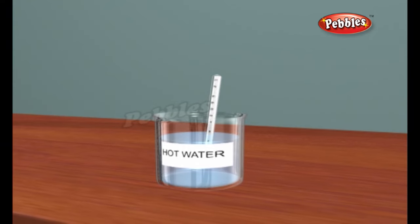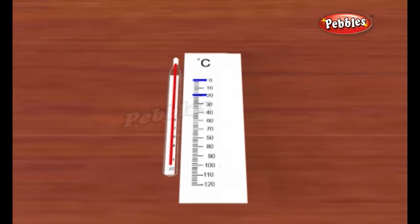Similarly, if we dip the thermometer in boiling water, we can wait for the mercury to rise up and then make a mark equivalent to 100 degrees Celsius.